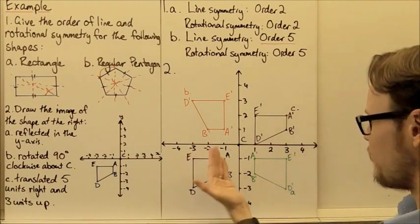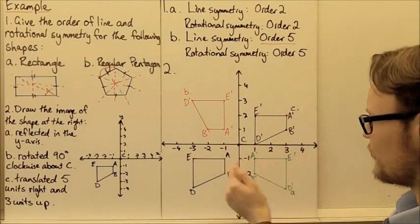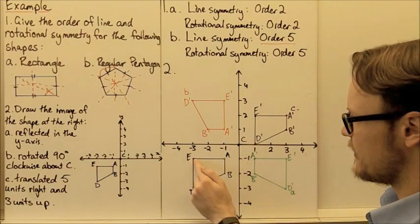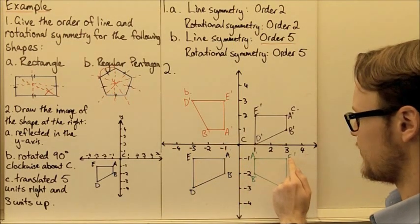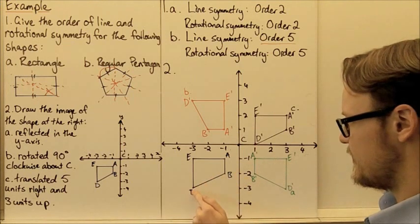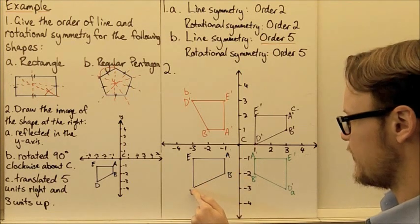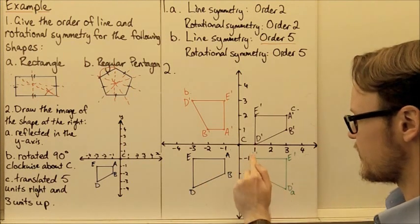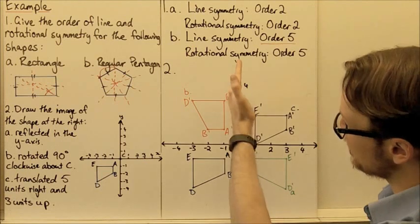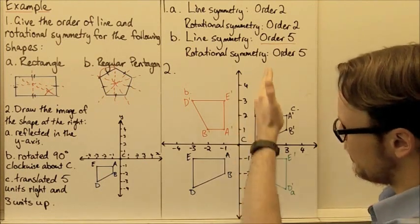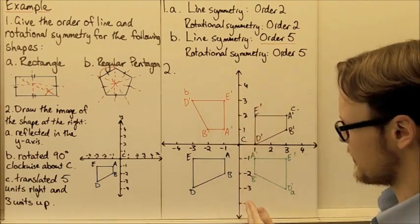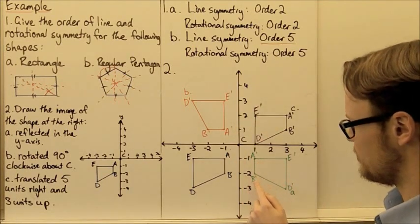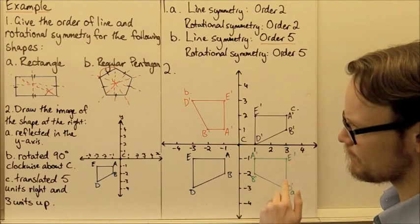We can see that we've reflected the whole lot. Negative 3 becomes positive 3 here as well. Here is our shape reflected about the y-axis, giving us A dash, B dash, D dash, E dash.